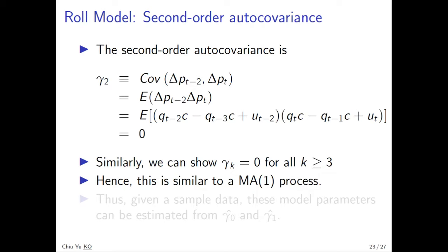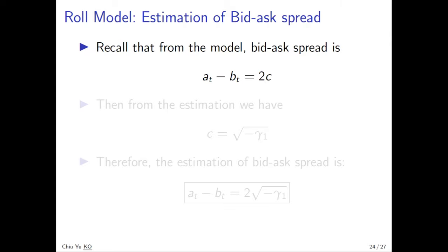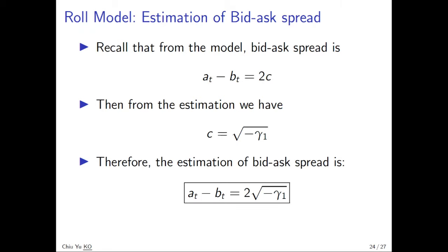And using the model, parameter can be estimated using sigma zero and sigma one. So let's recall, the bid spread, A minus B is equal to C. And from what we just saw, the estimation C is equal to square root of gamma one, the first order covariance. That's why, if you want to measure bid spread, we can calculate the price and do the first difference.